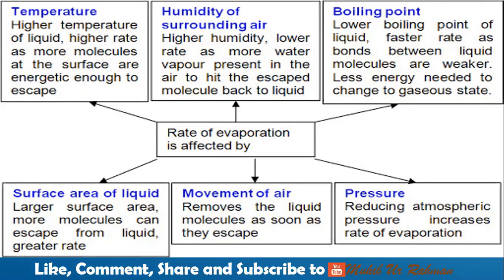For example, if it is a plant-based liquid, the boiling point is less and density is less, so the rate of evaporation is less. Similarly, spirit, acetone, or petrol have a lower boiling point, so the rate of evaporation is more — they evaporate rapidly and are volatile in nature.